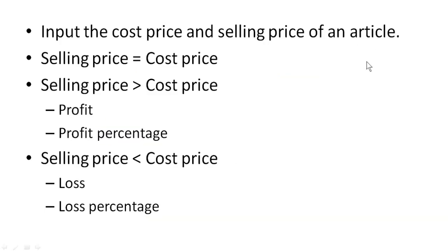You are going to see the question: input the cost price and selling price of an article. You are going to input two values — cost price and selling price. First, you are going to check whether both are the same, i.e., selling price equal to cost price. If it is so, then you are going to display 'neither profit nor loss'.